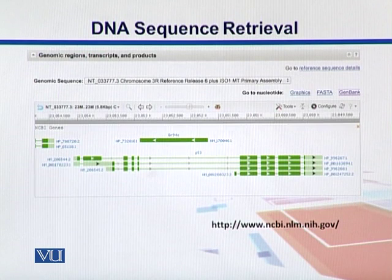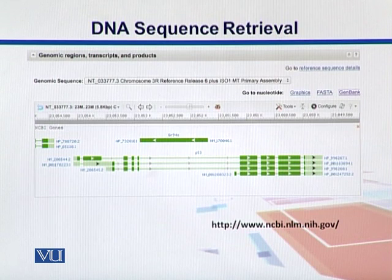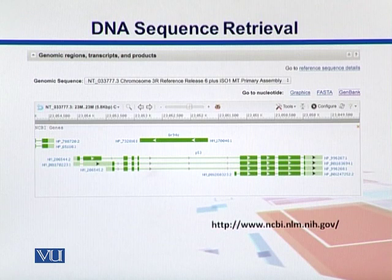In the Genomic Regions, Transcripts and Products tab we can look into its products. When genes are expressed, DNA is converted into RNA, and since this is a eukaryotic genome there is alternative splicing, so we can find different alternative splice variants of this gene. Towards the upper right side there are options: Go to Nucleotides, Graphics, FASTA, and GenBank — these are the different views that give access to the data files associated with this gene.